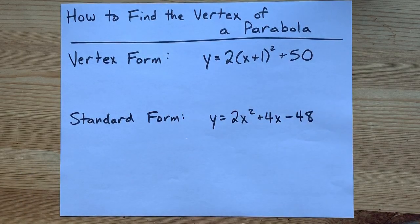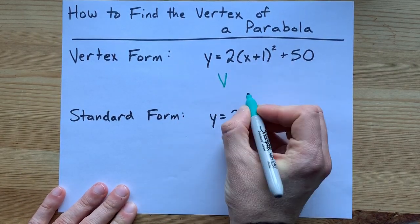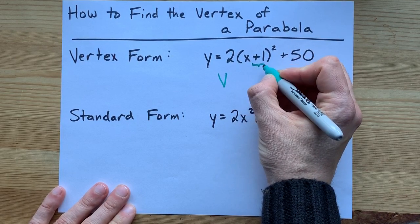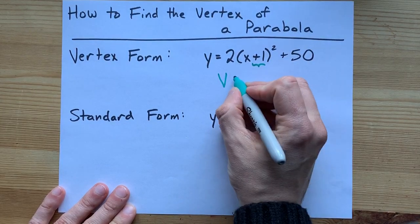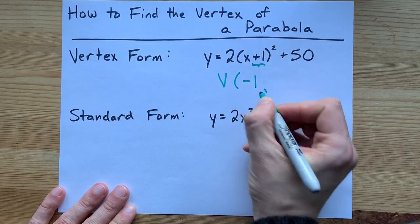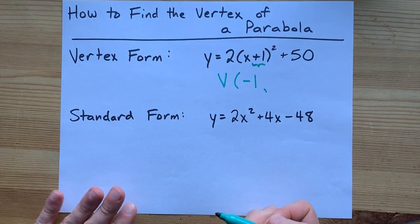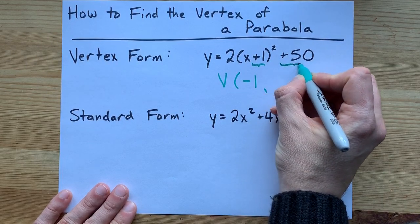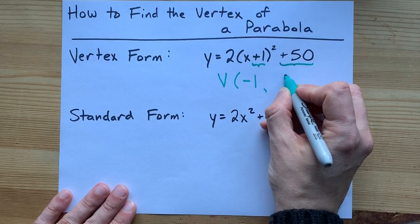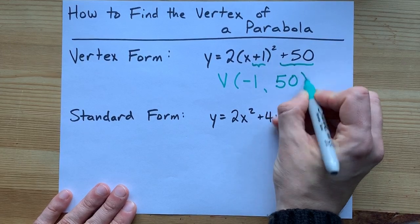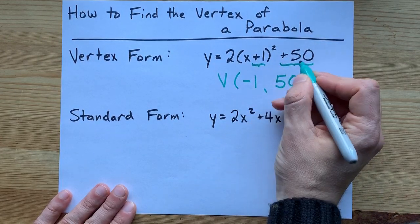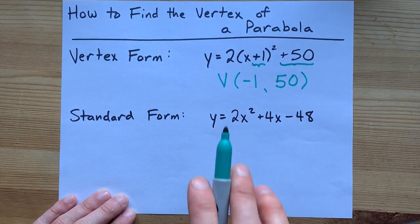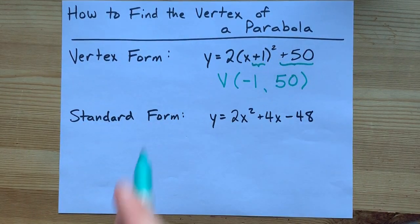The vertex is basically given to you. The vertex from vertex form is taking the number that's added or subtracted from x in brackets and flipping its sign. That x-coordinate is negative 1 in this case, because it was positive 1 inside the bracket. The y-coordinate of the vertex is the number that was added or subtracted from the end as is. The trickiest thing for kids to remember is that the sign here flips and the sign here stays the same. But the vertex is just straight up negative 1 comma 50, and if you do enough of these questions, you'll just see it instantly.